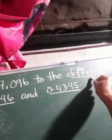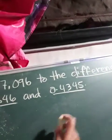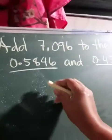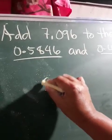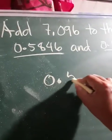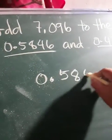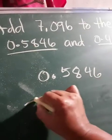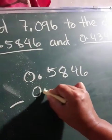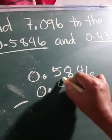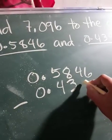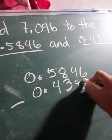When we say difference, it is subtraction. So we have here 0.5846 minus 0 point—align the decimal always—4345.